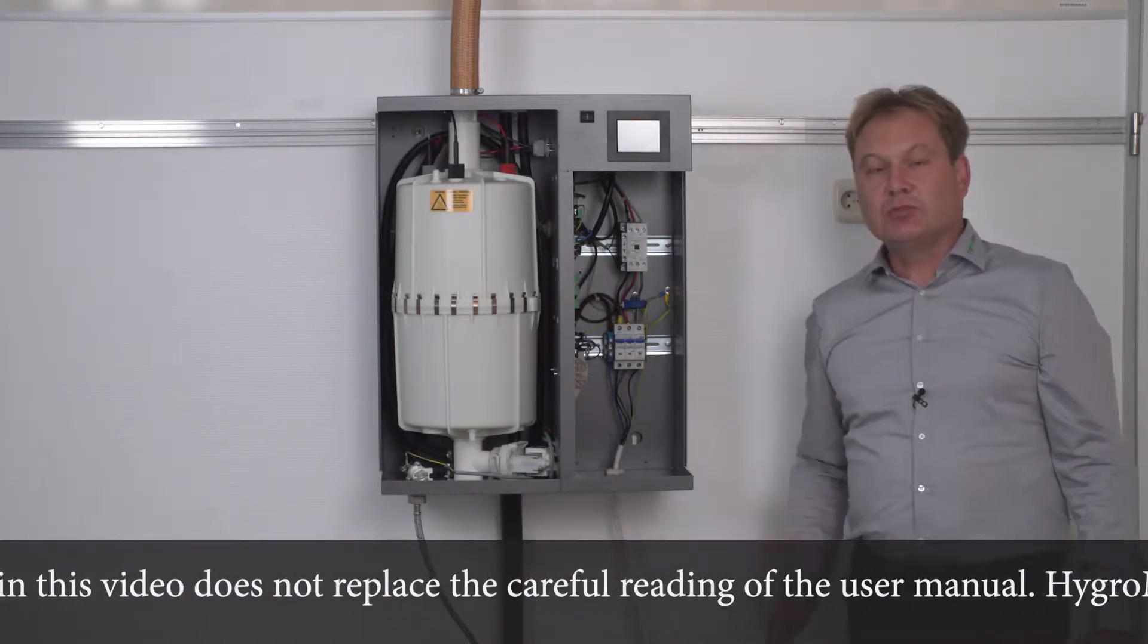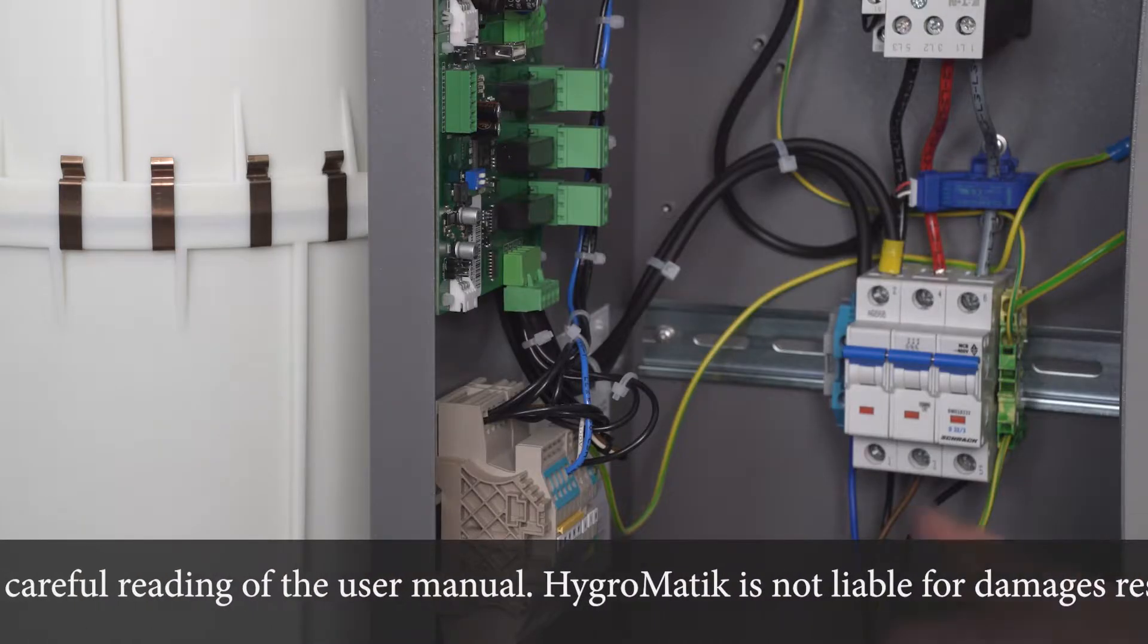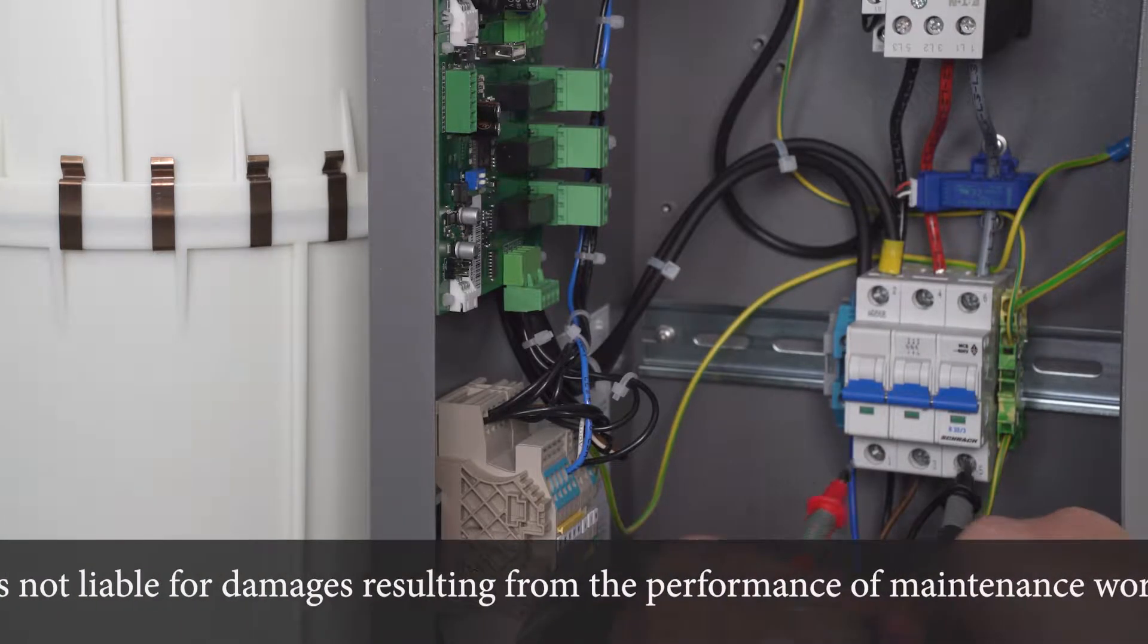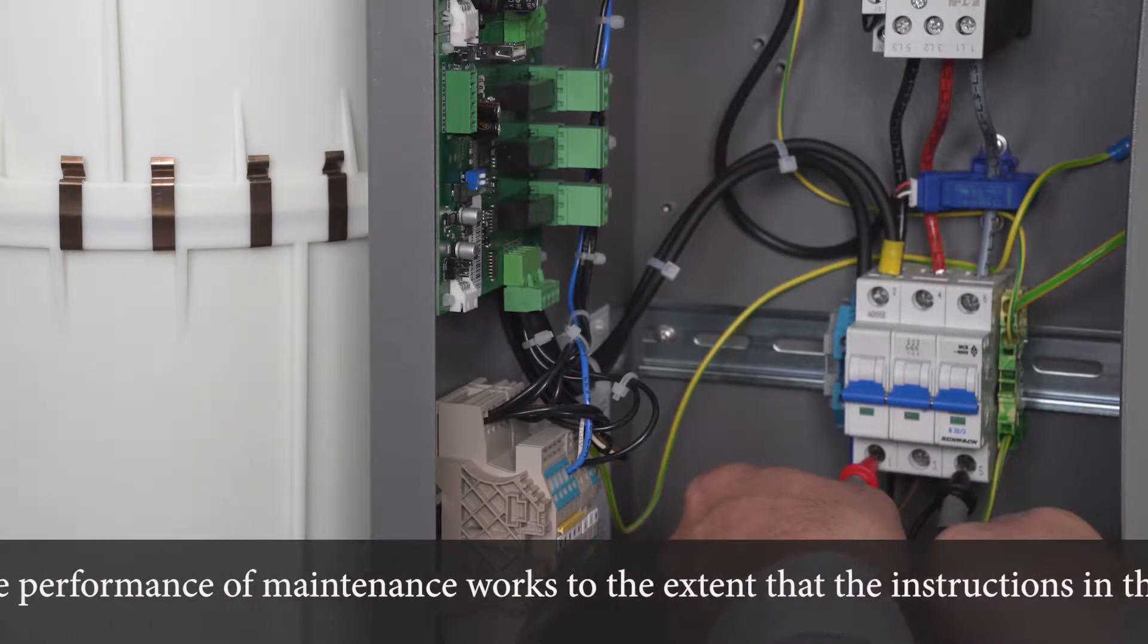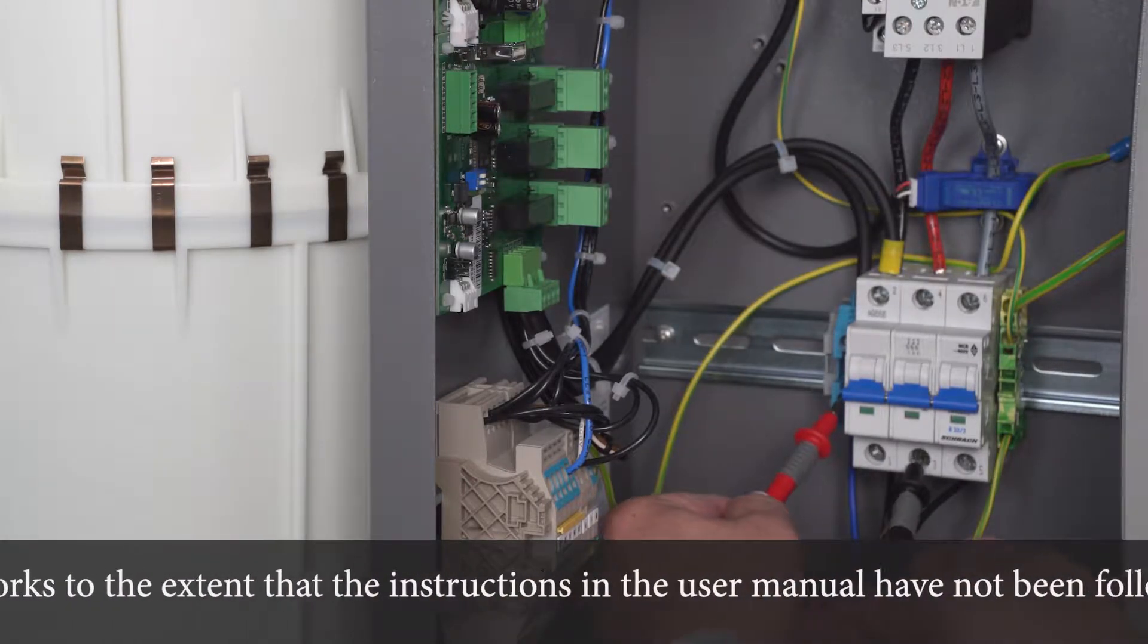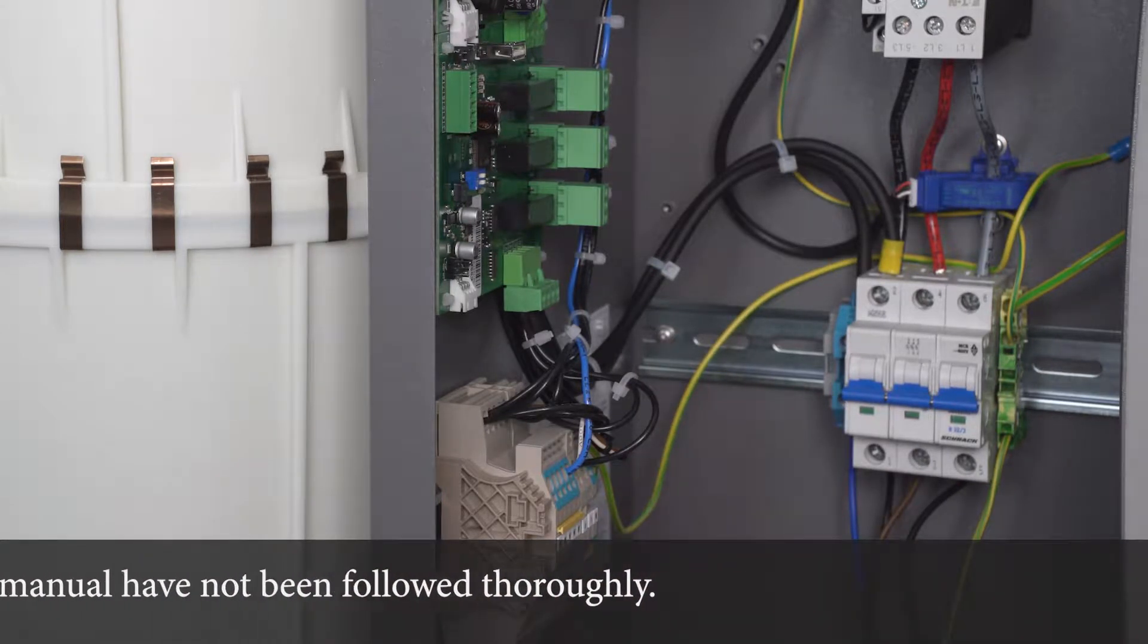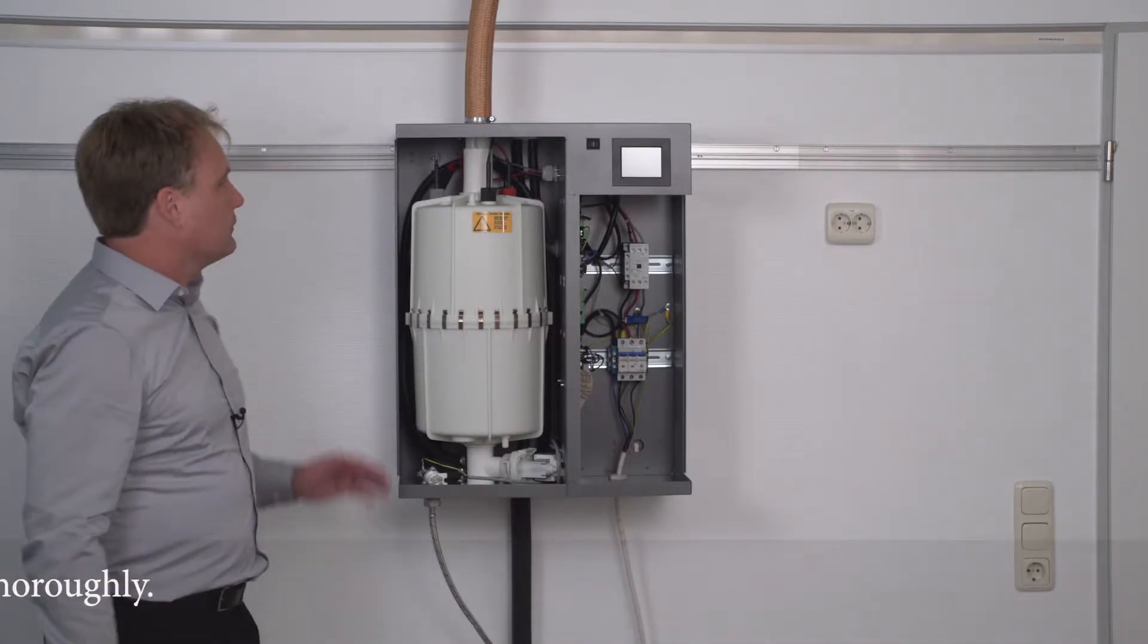Before I can start with the actual maintenance work I have to make sure that the power is off. To do this I check the circuit breaker that I switched off before. I first check for any phase to phase voltage and afterward I check for phase to neutral voltage. There is no voltage present. After I have checked for absence of power I can safely disassemble the steam cylinder.